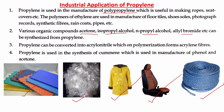Propylene is also used in the synthesis of cumene, which is used for the manufacturing of phenol and acetone. These are some of the uses of propylene and its polymer, polypropylene.